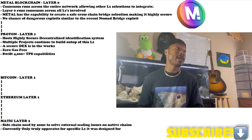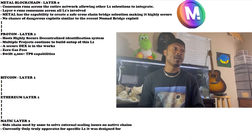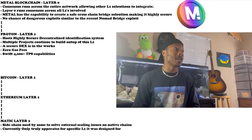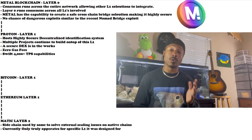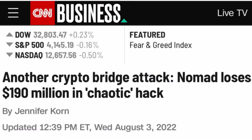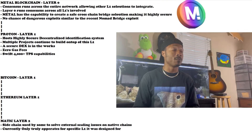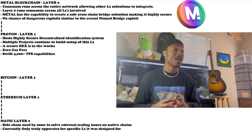Metal Blockchain is a layer zero. The consensus runs across the entire network, allowing other L1 solutions to integrate. Layer zero actually runs consensus across all L1s involved, and Metal has the capability to create a safe cross-chain bridge solution, making it highly secure — so we wouldn't see issues like the Nomad bridge exploit that happened recently.